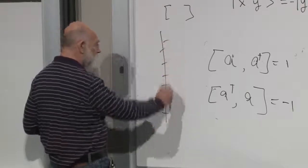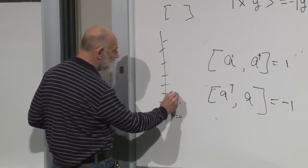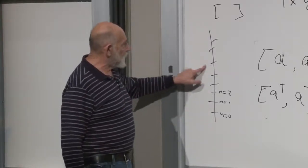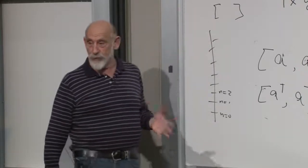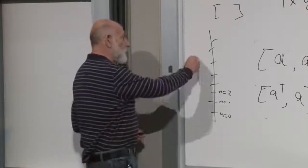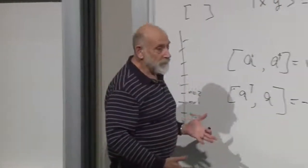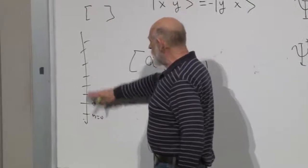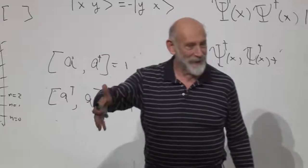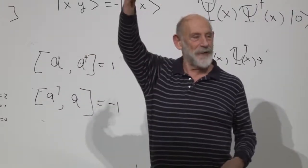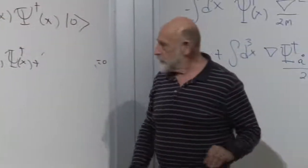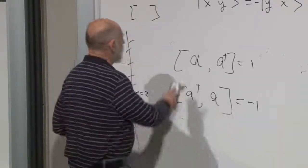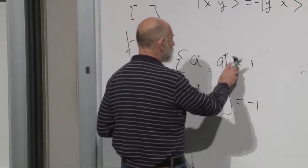Here's the stack of all possible states: n equals zero, one, two. Creation operators just take you up the ladder and since the ladder never ends, a creation operator never runs into the problem an annihilation operator does. Annihilation operators, when they get down to the bottom, give zero. The spectrum of n going from zero to infinity is not the same if you turn it upside down — you can go up to infinity but you can't go down past zero. What about fermions? They also have creation and annihilation operators but with anti-commutation relations.